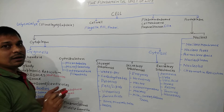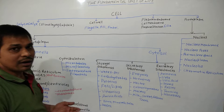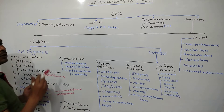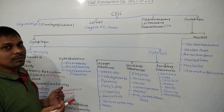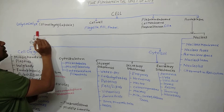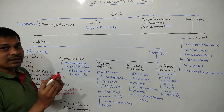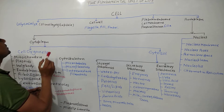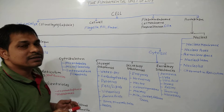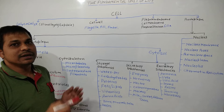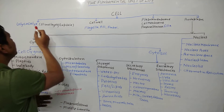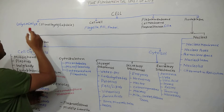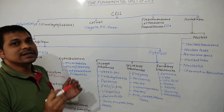Glycocalyx may be present or absent in prokaryotic cells. If glycocalyx is present in a loose, jelly-like layer form, it is known as the slime layer. And when it is present in a tough, hard, rigid layer form, it is known as the capsule. So capsule and slime layer are the forms of glycocalyx, and it provides protection to the prokaryotic cell, acting as a framework of the cell.